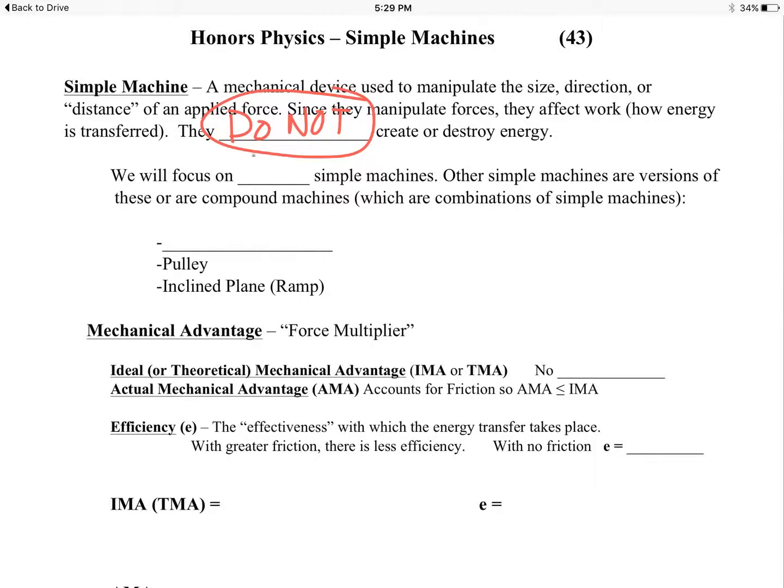We're going to focus on three simple machines. There are other simple machines that are basically versions of these three, or there are compound machines which are combinations of these simple ones. The three basic ones are the lever, the pulley, and the inclined plane or ramps. Levers show up everywhere, like in tools - a hammer, screwdriver, pair of pliers. Also in sports equipment like a baseball bat, hockey stick, tennis racket. Pulleys are just basically wheels with strings wrapped around them, and inclined planes are like ramps.